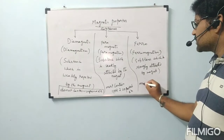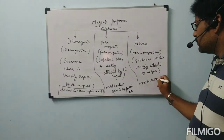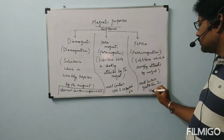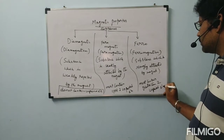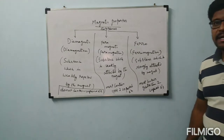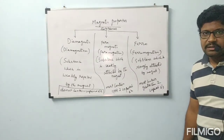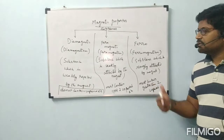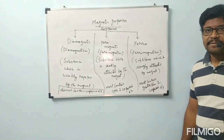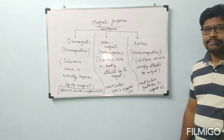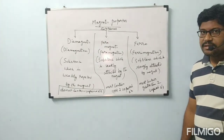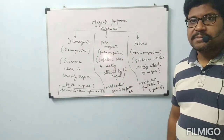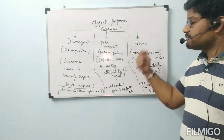Ferromagnetic substances must contain greater than 2 unpaired electrons — that is, 3, 4, or 5 unpaired electrons. Depending on magnetic properties, substances are classified into three types: diamagnetic, paramagnetic, and ferromagnetic.